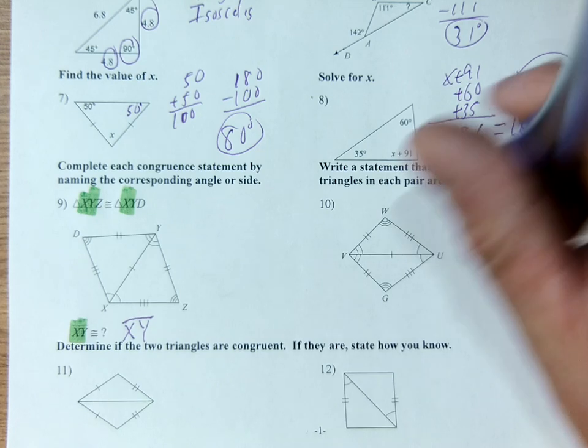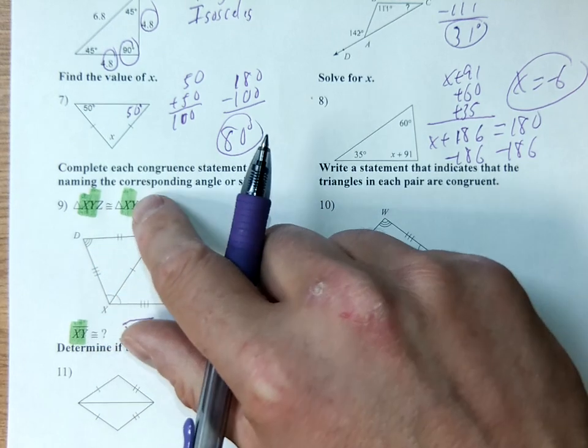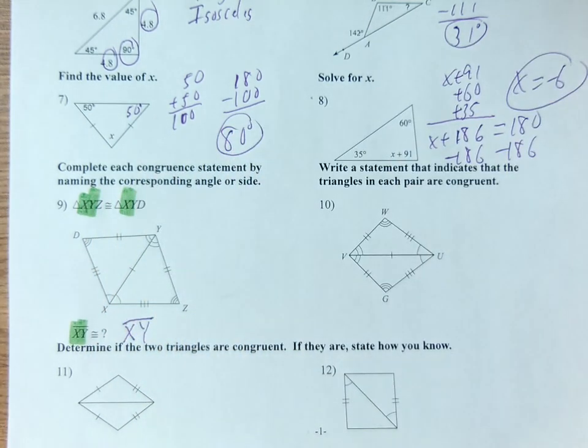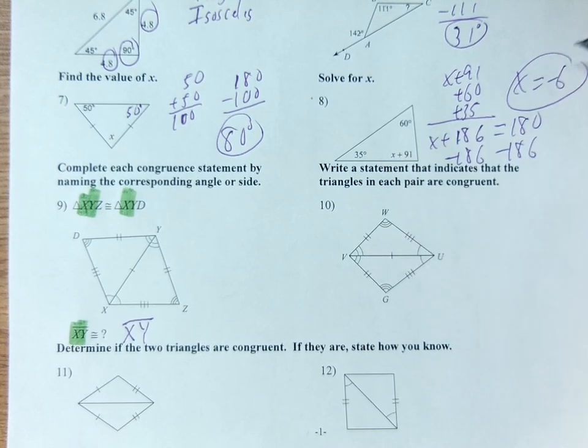That doesn't mean it's going to be that way on the test. So I could have asked you for yz. Yz would equal yd. Xz would equal xd. Pay attention to what it says.